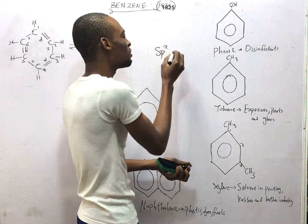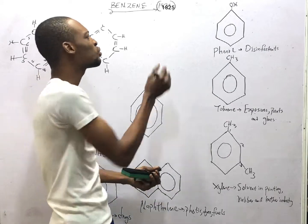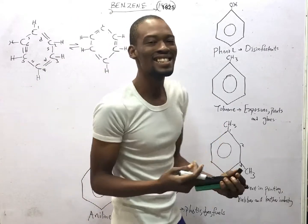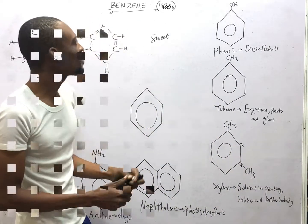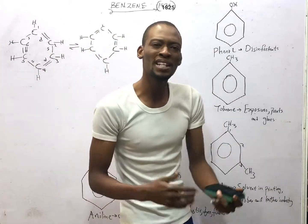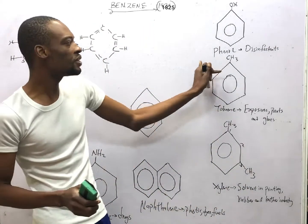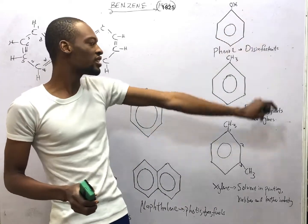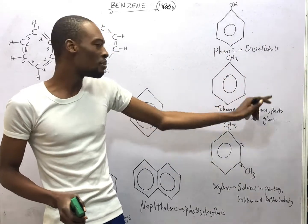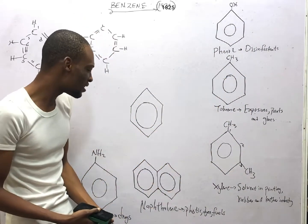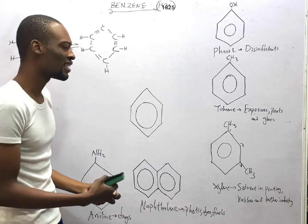Benzene is sp2 hybridized. Benzene is colorless and has a sweet smell — that is the reason it is referred to as an aromatic hydrocarbon. In summary, aromatic hydrocarbons are mainly benzene and its derivatives: phenol (benzene with OH, or hydroxybenzene), toluene (methylbenzene), xylene (dimethylbenzene), naphthalene (two benzene rings together), and aniline (benzene with NH2).